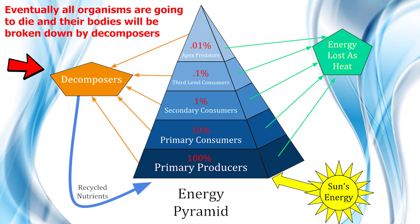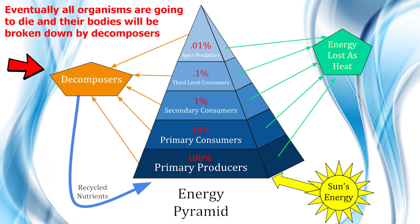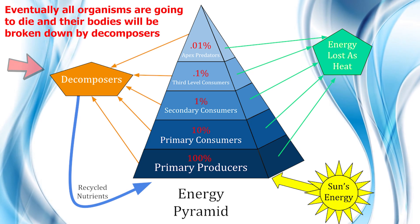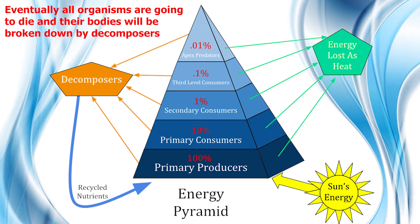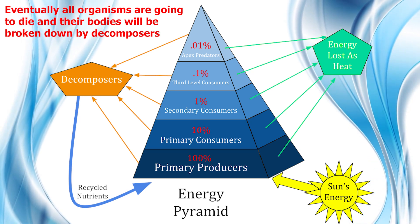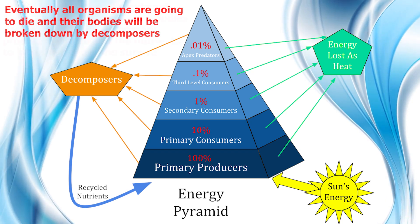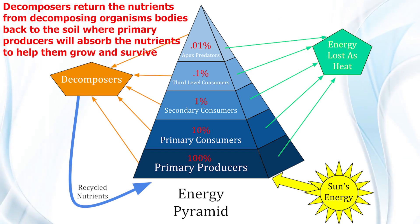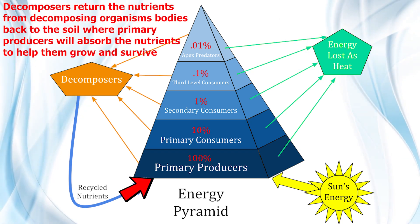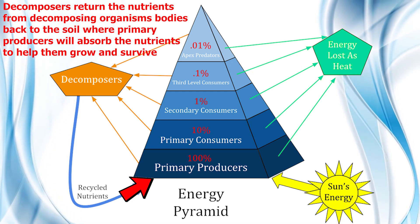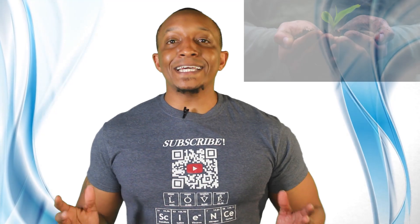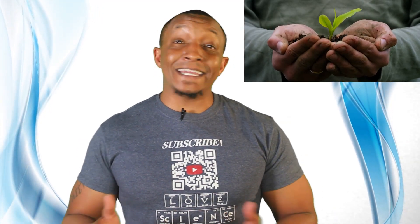On the left side of the diagram, all the arrows point to decomposers. This makes perfect sense because eventually all organisms are going to die, and their bodies will be broken down by decomposers who return the nutrients from these organisms' bodies back to the soil, where primary producers will absorb these nutrients to help them grow and survive. It really is the cycle of life, as famously stated in the movie The Lion King.